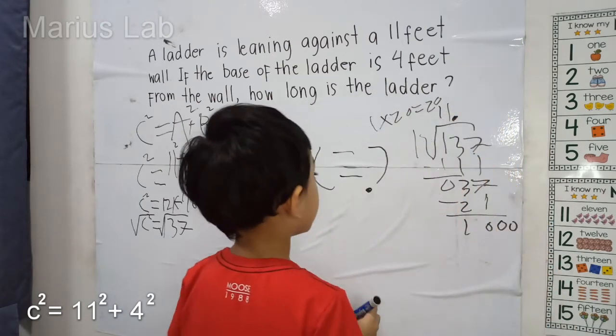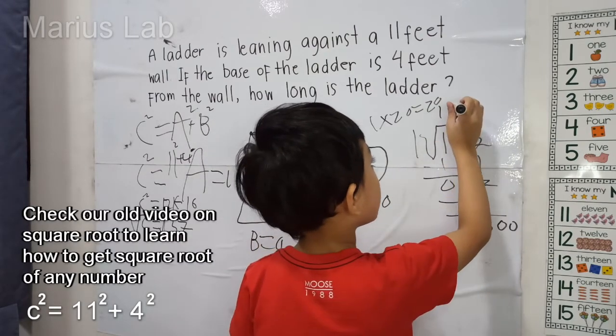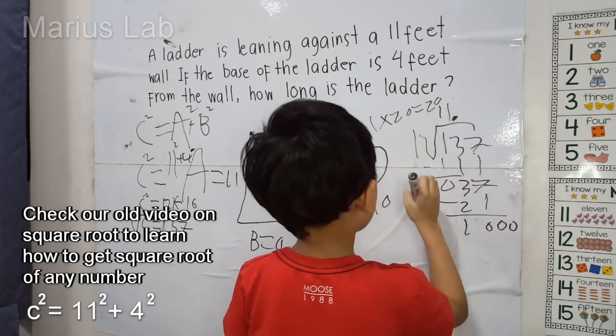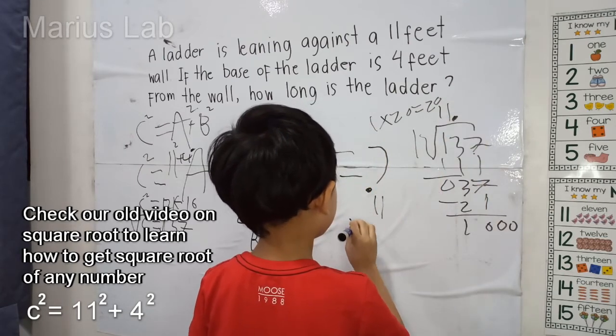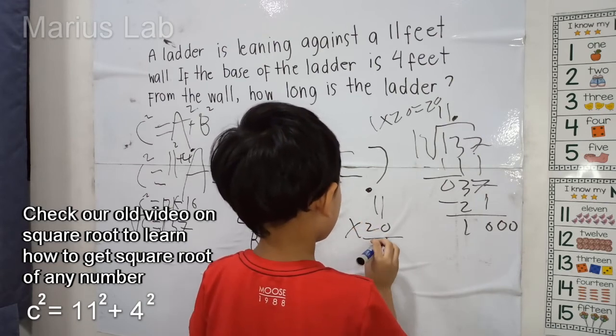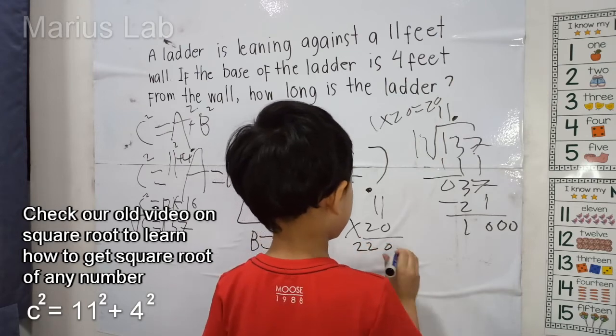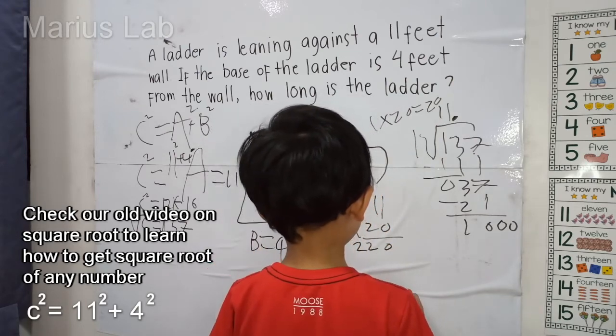1 times 20 equals 220. And then let's try 6.